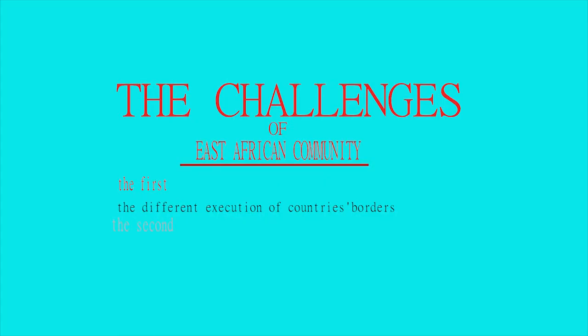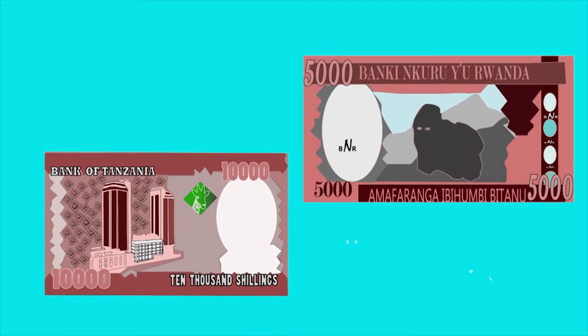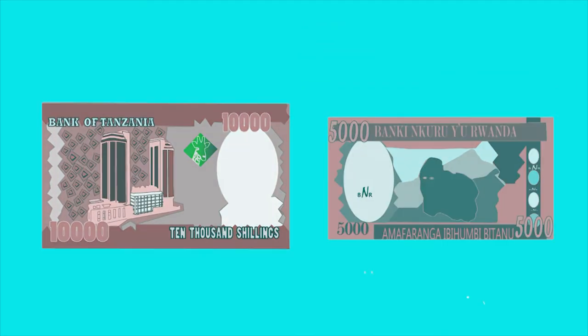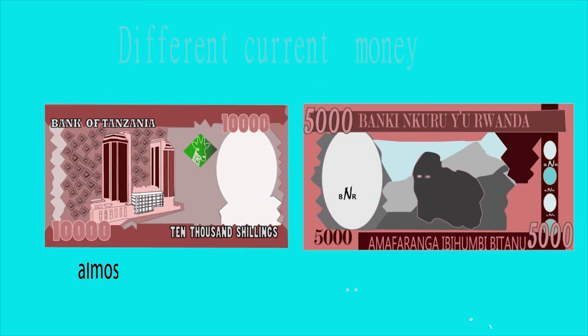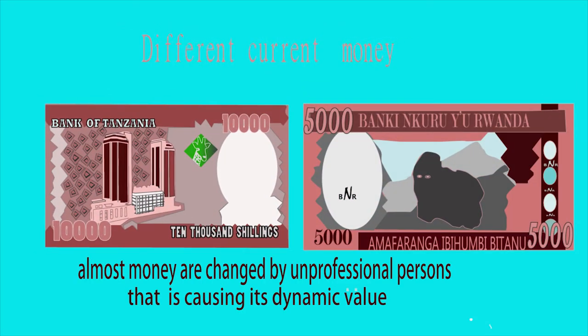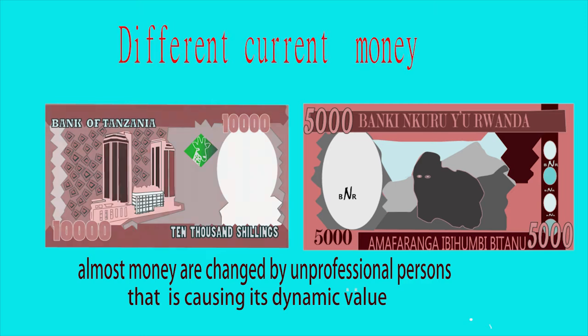The second challenge is the use of different currencies. Each country has its own money, but they share one market as EAC. That causes fluctuation in the value of money.